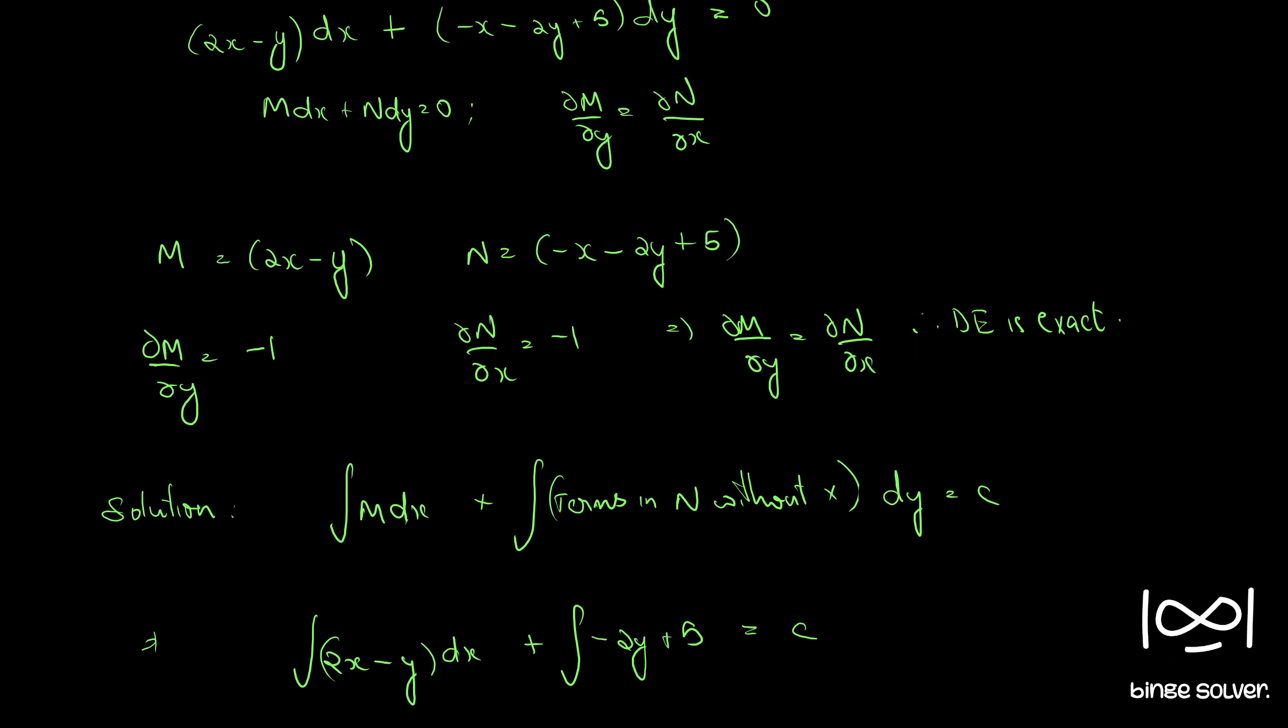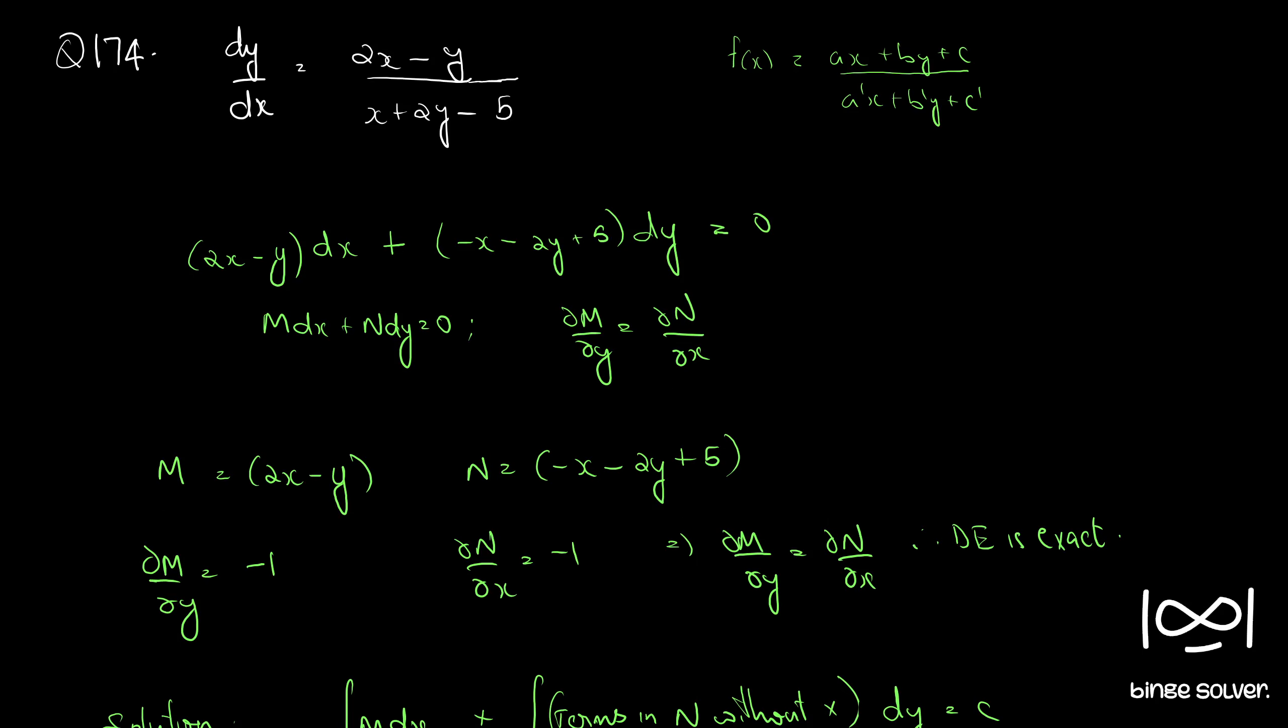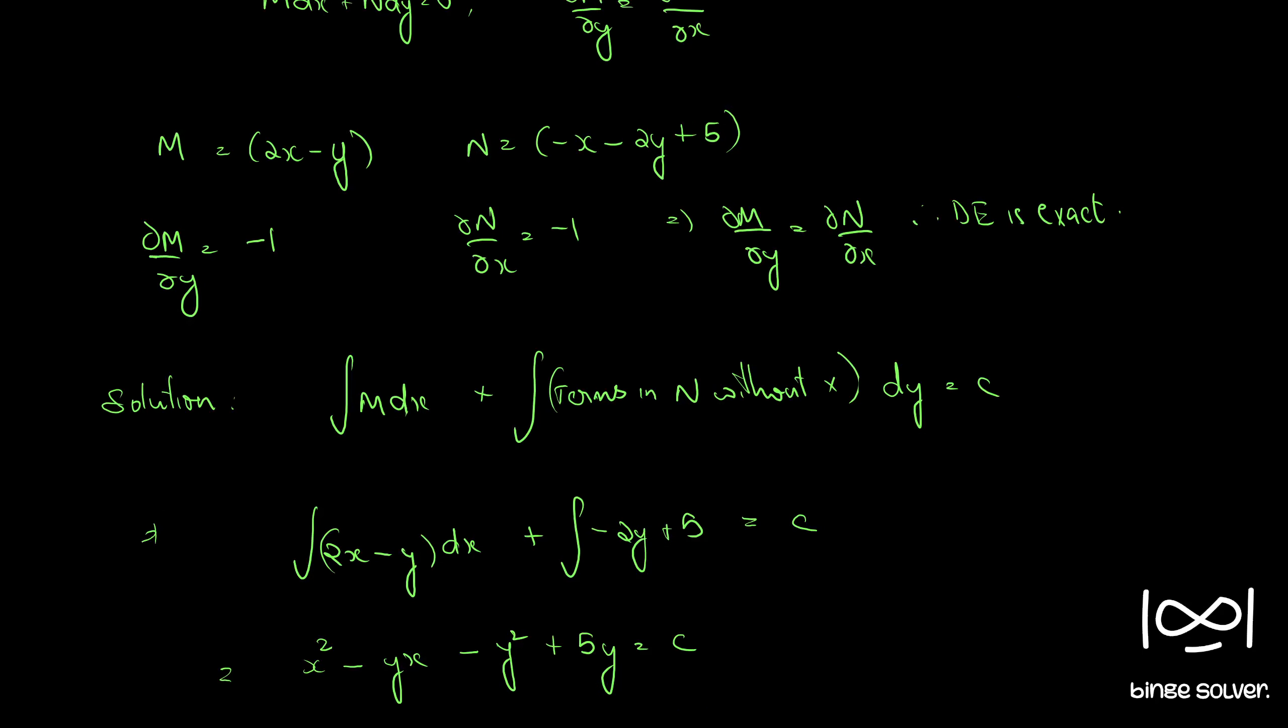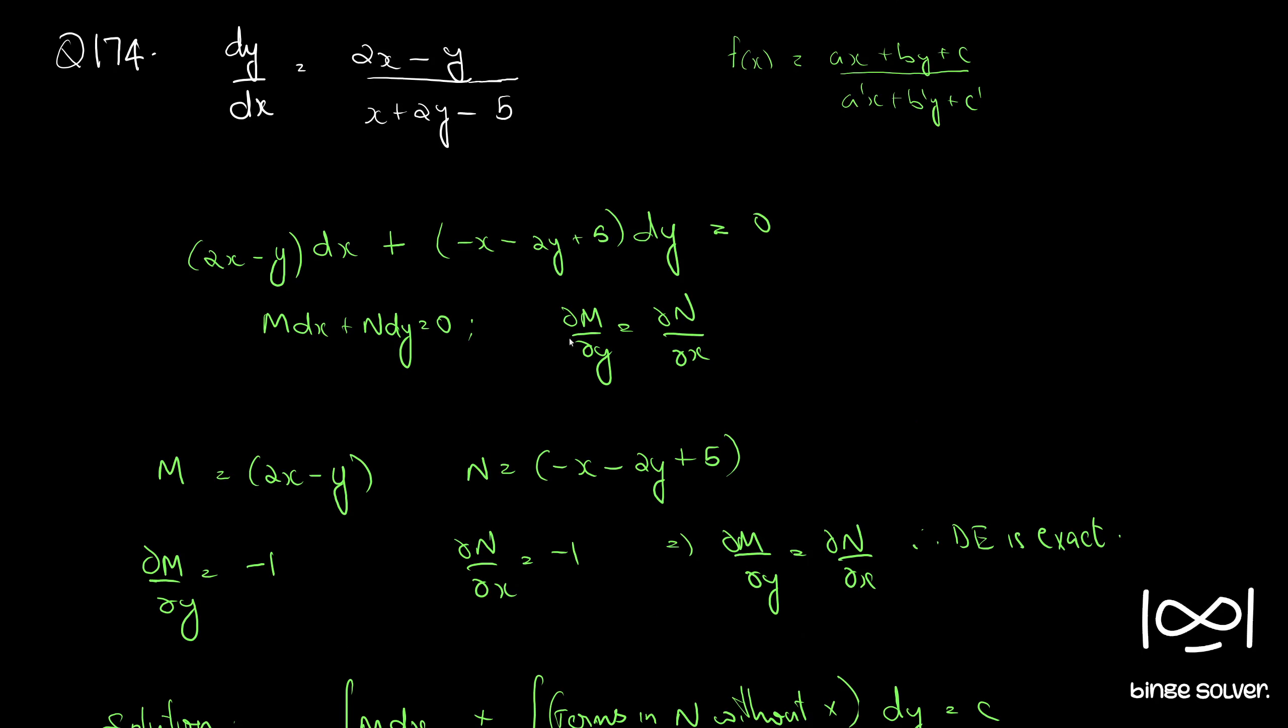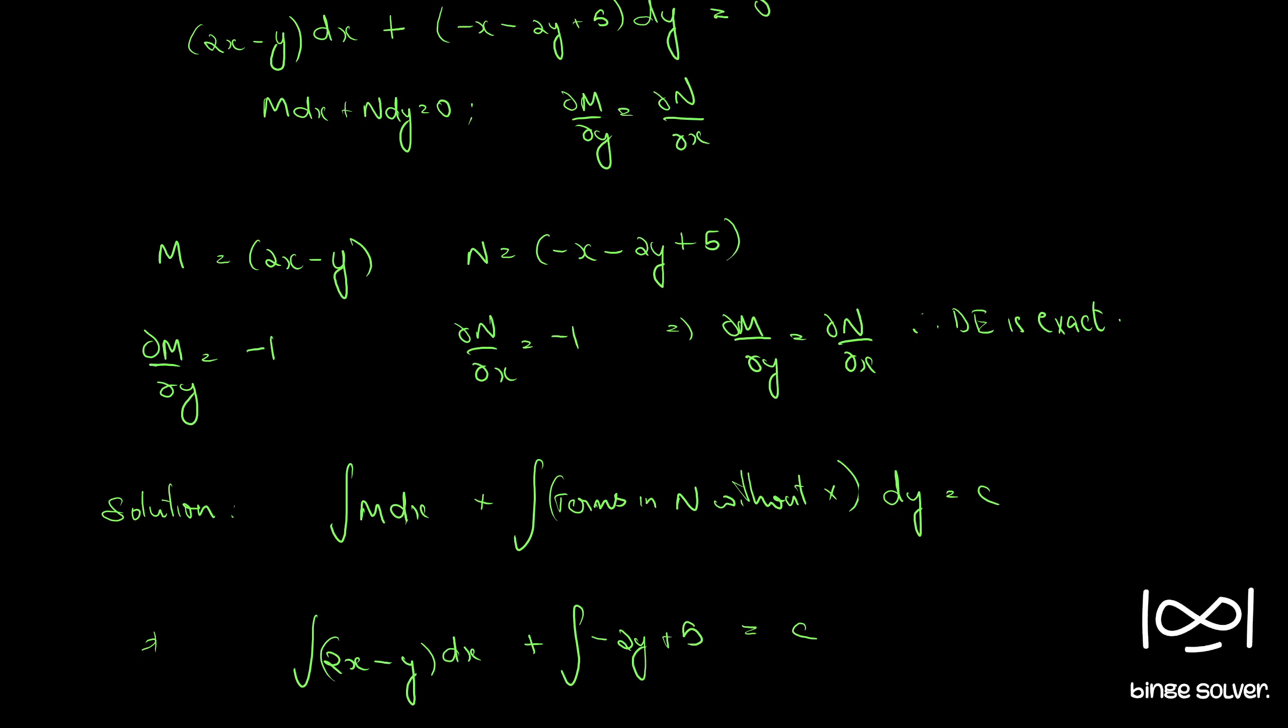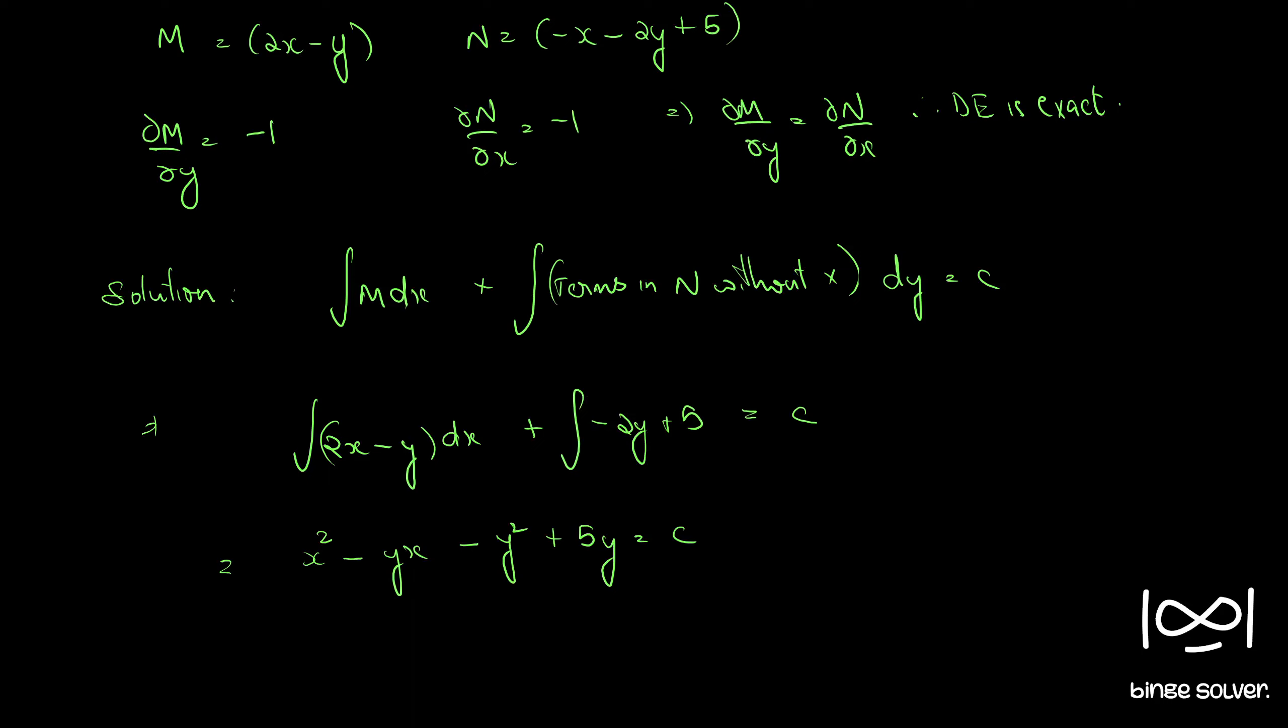This is the solution to question number 174. In the textbook, the answer given is plus y² but minus 2y. It will come only if it was x - 2y. I'm not sure whether the question has a printing mistake, but otherwise it looks like the answer is correct. If you spot any mistake in the steps, do comment. This is the solution to question number 174.